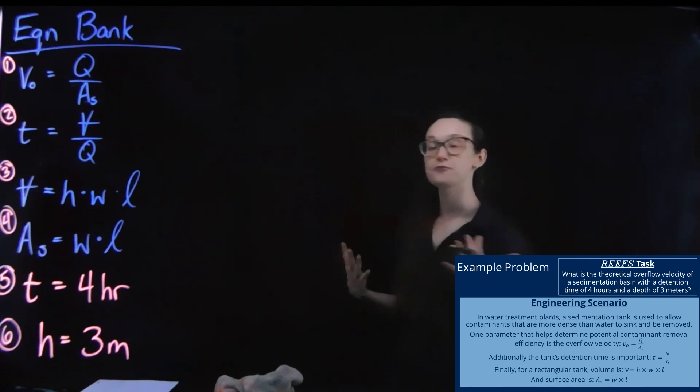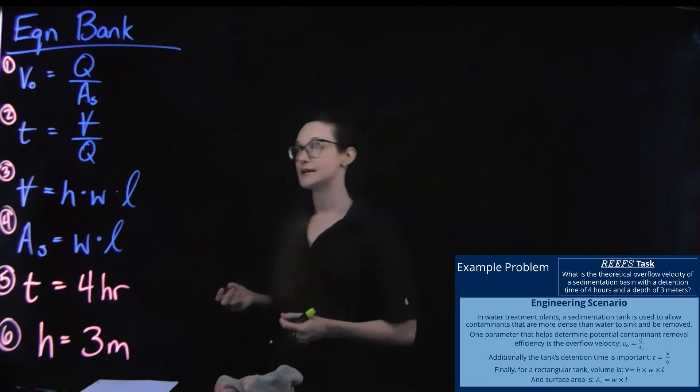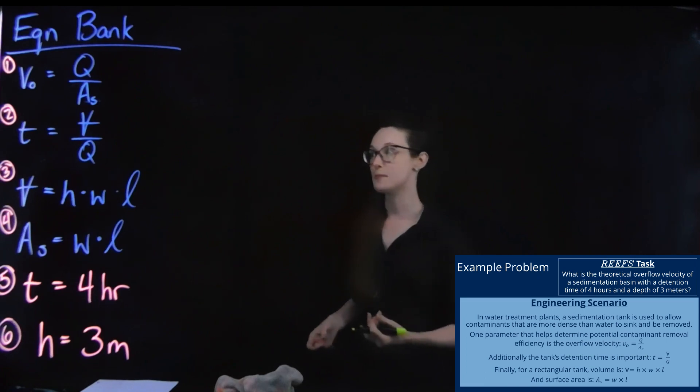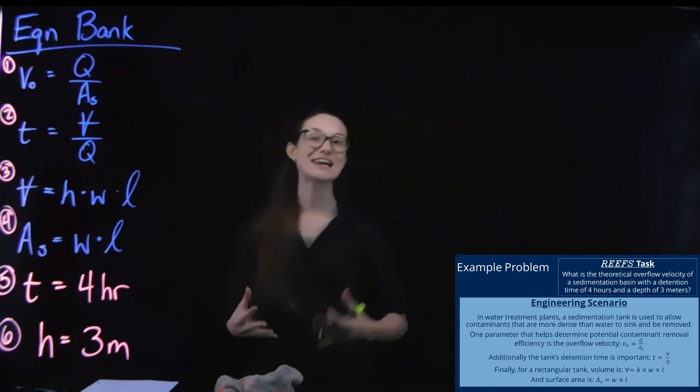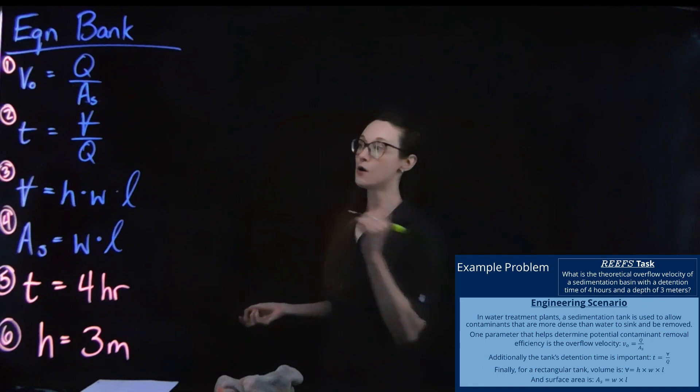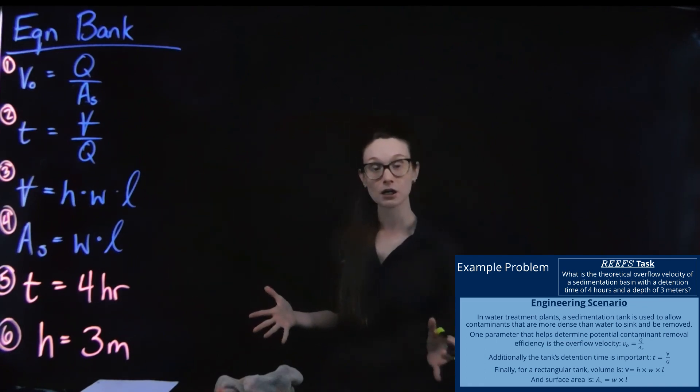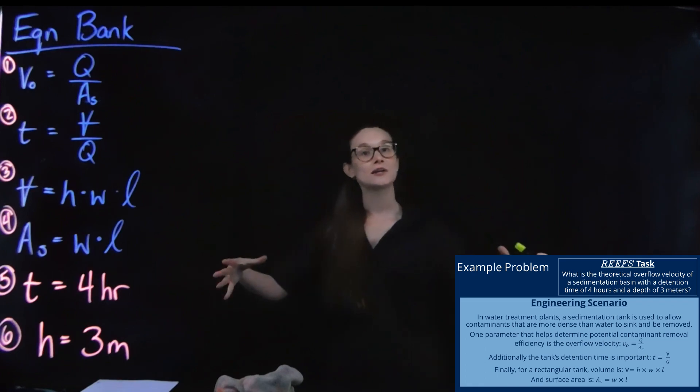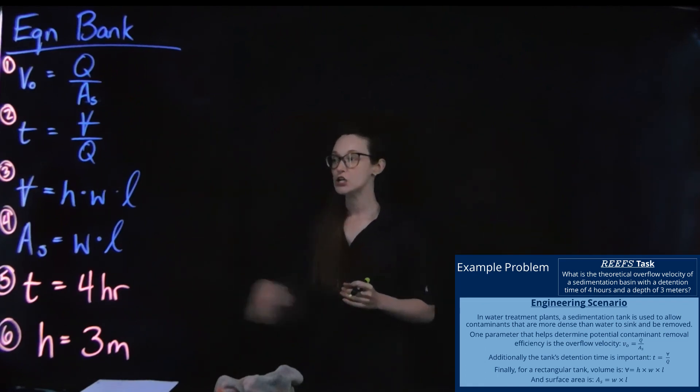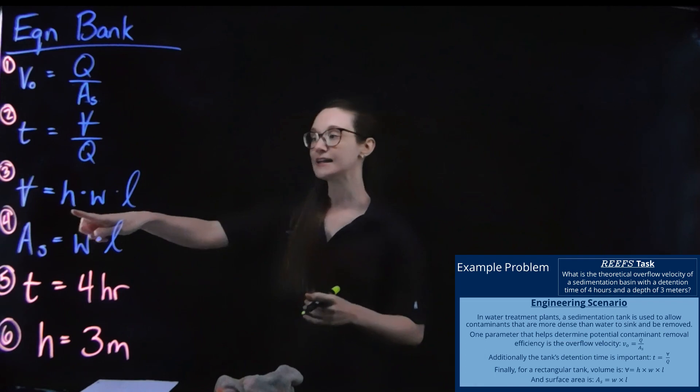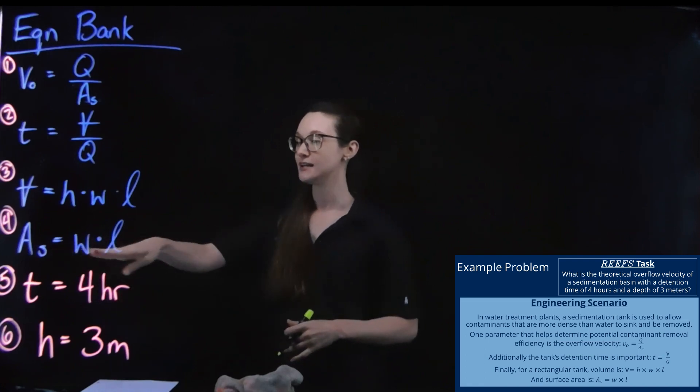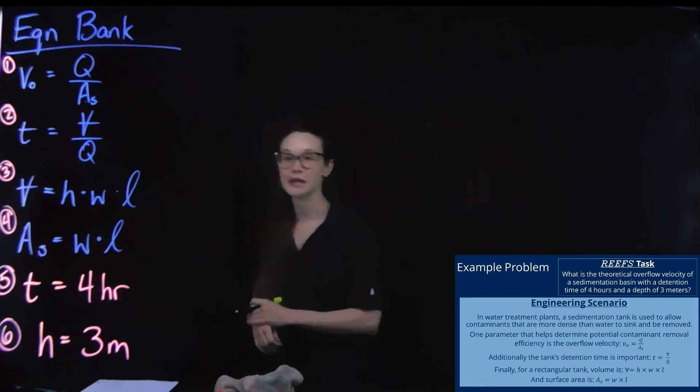So in this case, the four equations that I know are relevant to this scenario. The first is our equation for our overflow velocity, which we call V sub O, and then we have our standard equation for detention time. Now, equations three and four here, I know based on the geometry of this settling tank. In this case, we're saying that our settling tank is a rectangular prism, a rectangular tank. So the volume of the tank is the height times the width times the length, and A sub s, or surface area, is just the area on the top, our width times our length.